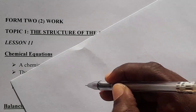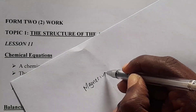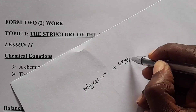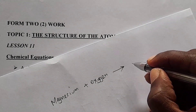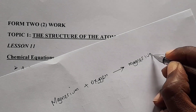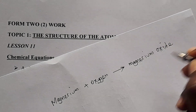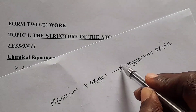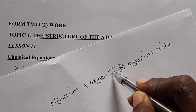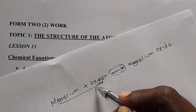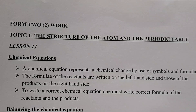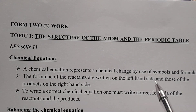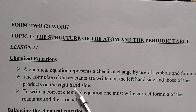If you are having an equation like magnesium reacting with oxygen, these two atoms — magnesium and oxygen — are the reactants because they are on the left-hand side. The product will be magnesium oxide, which is placed on the right-hand side. The arrow guides you: whatever is behind the arrow are the reactants, and whatever comes after the arrow is the product side.